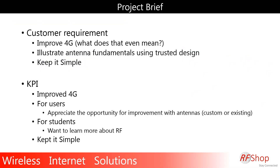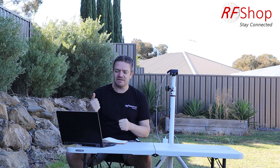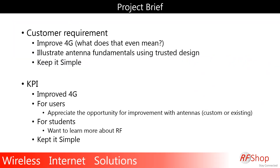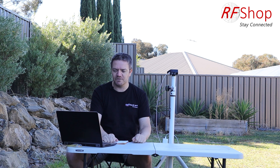I want to illustrate the antenna fundamentals, but we need to keep it simple. The customer is the user, the customer is me, and if I want to achieve something I need to keep it simple. If I'm going to bamboozle everybody with how clever this stuff is, forget it. KPI — key performance indicators — just throwing in some fancy words. If you get improved 4G, you've proven your point. Did you learn something about RF? Did I keep it simple? That's going to be a tough one.